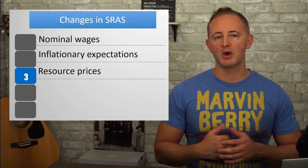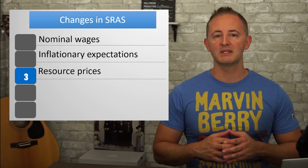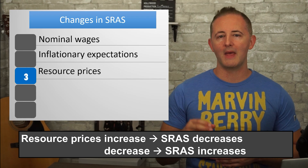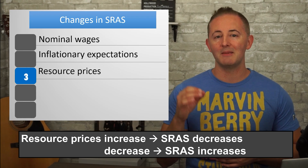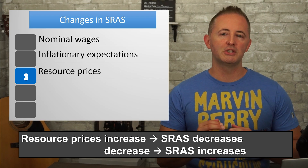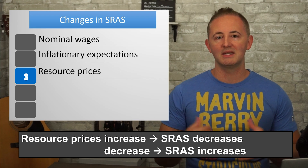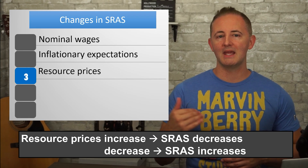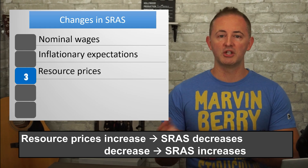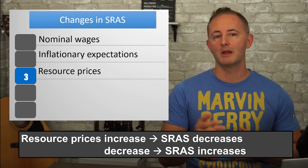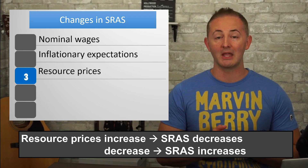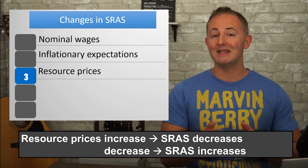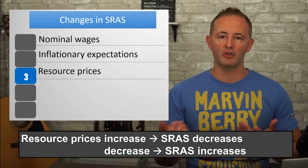Changes in resource prices and the availability of resources can also affect the SRAS curve. Because this is a macro model, we're talking about resources of economy-wide significance, like oil prices. If those prices increase, the SRAS curve will shift left, since firms will have less money to spend on other parts of production, like hiring workers. And if those resource prices decrease, the SRAS curve will shift to the right.